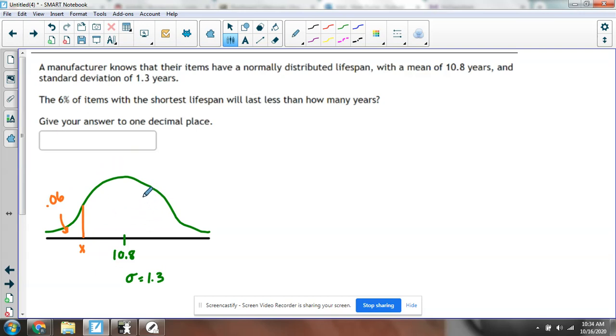Which leaves 94% above it, but all we care about is the 6% below it. So when you have the value, you're looking for the probability.